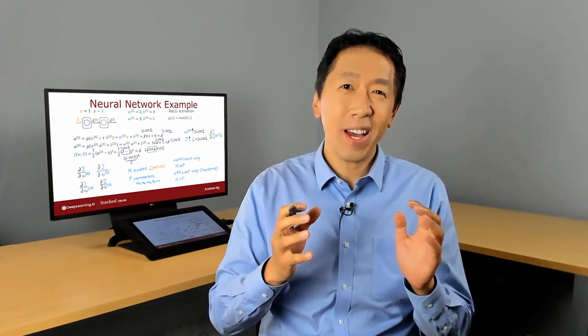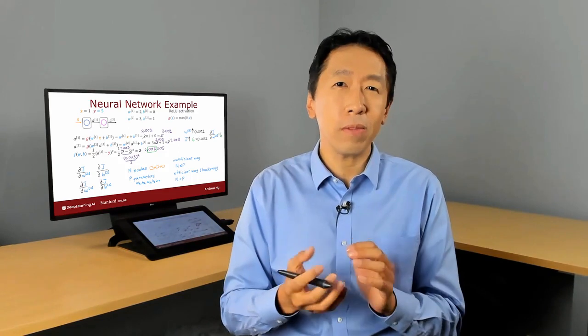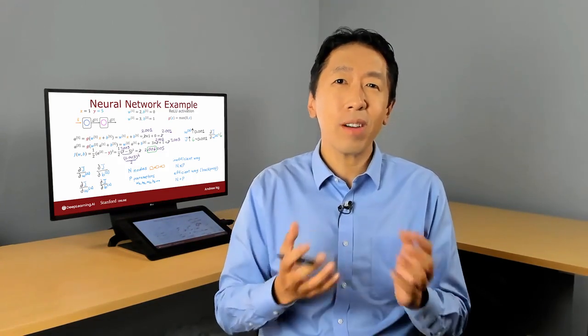Many years ago, researchers used to write down the neural network by hand, manually use calculus to compute the derivatives, and then you implement a bunch of equations that they had laboriously derived on paper to implement backprop. Thanks to the computation graph and these techniques for automatically carrying out derivative calculations, sometimes called autodiff for automatic differentiation, this process of researchers manually using calculus to take derivatives is no longer really done. At least I've not had to do this for many years now myself because of autodiff.